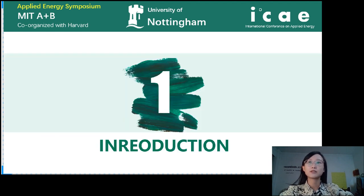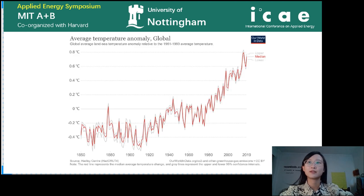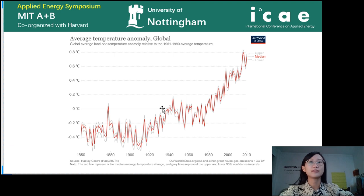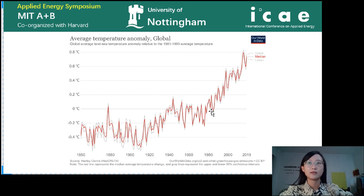Here comes the introduction part. This picture shows the global average temperature from 1850 to 2019. To set the scene, let's look at how the temperature has warmed. If we set the 1980s as a baseline, the global temperature has risen sharply in the past several decades — it increased about 0.7 degrees centigrade higher than our baseline. Carbon dioxide emission really contributes a lot to global warming.